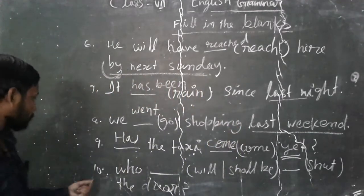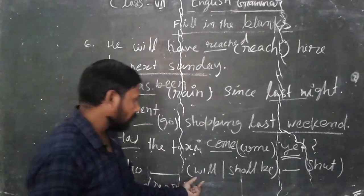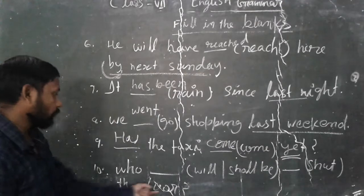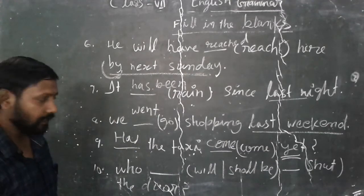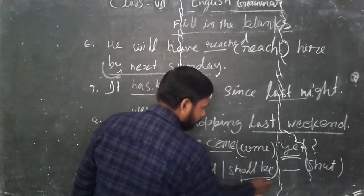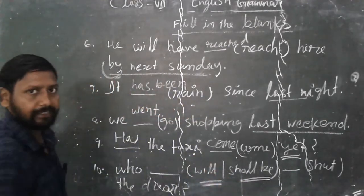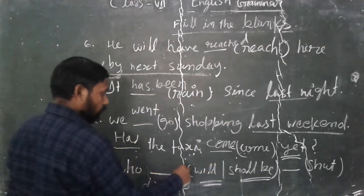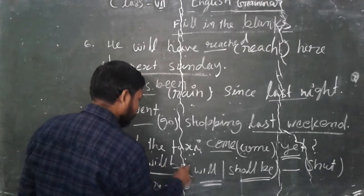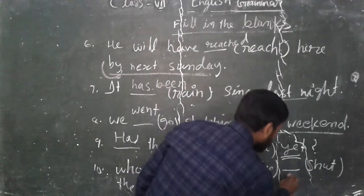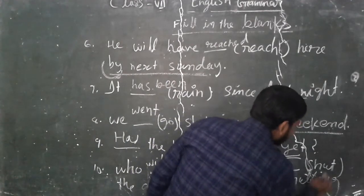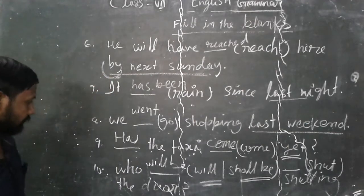Who will be or shall be shackle the door. It is looking similarly the future continuous tense because shall be, will be are presenting here. So who will be shutting the door.